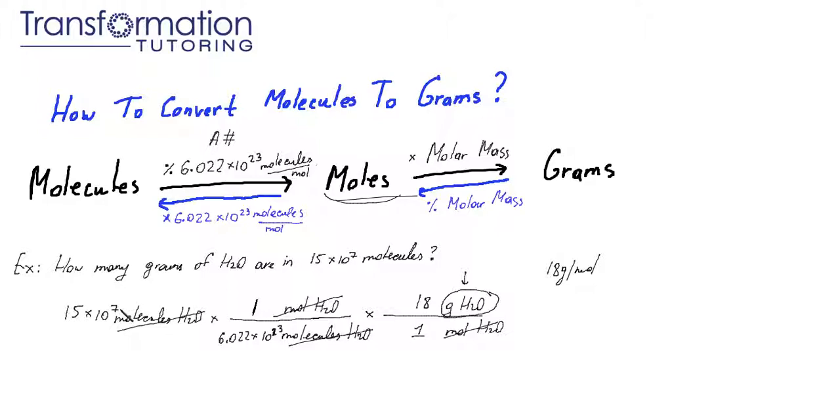When I plug it into my calculator, I will put all these numbers in parentheses, so the calculator will understand me correctly. I will write 15 times 10 to the 7 divided by Avogadro's number, which I will have to put in parentheses, and multiply it by 18 to give me my answer.